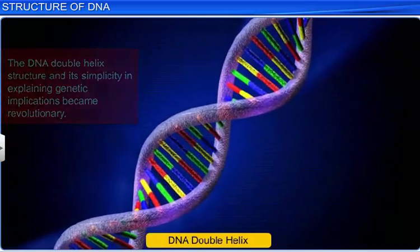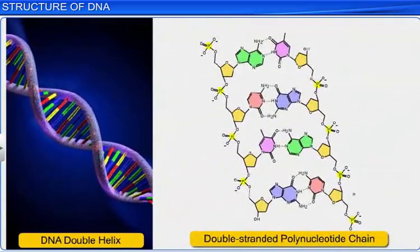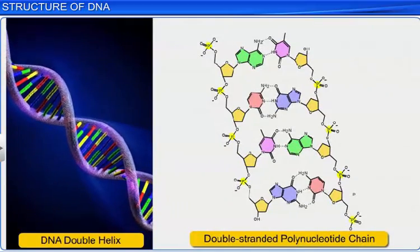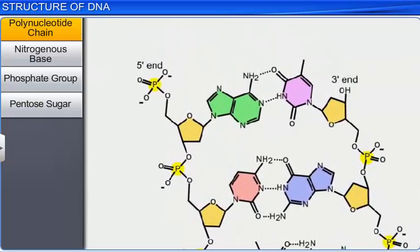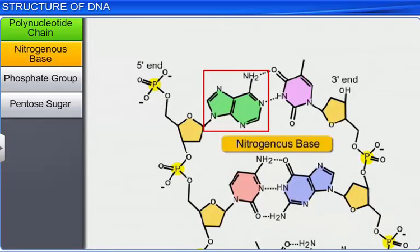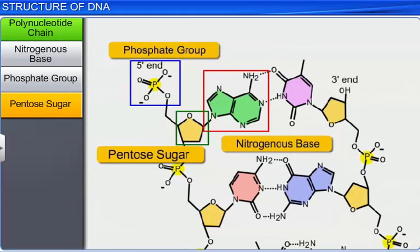Let us now learn about the chemical structure of a polynucleotide chain present in the DNA double helix structure. The polynucleotide chain is made up of three components: a nitrogenous base, a phosphate group, and a pentose sugar, which is deoxyribose.